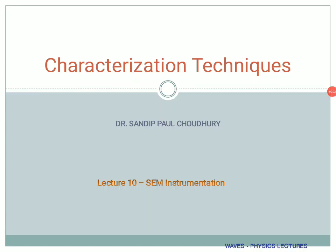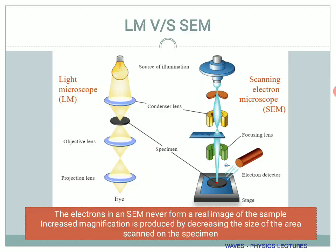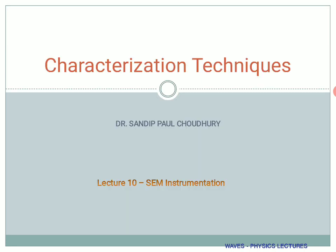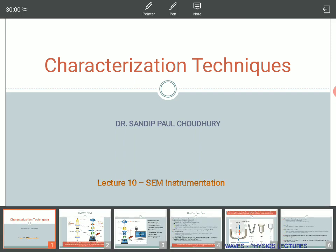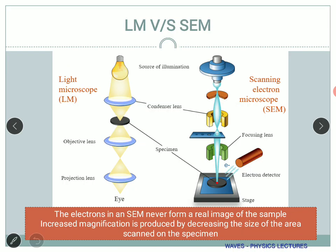We are going to start with lecture 10 and talk about the instrumentation part of the scanning electron microscope. A scanning electron microscope is usually a system which can be compared to an optical microscope, but the instrumentation part is slightly more complicated. Let's use a diagrammatical representation to understand this. In a light microscope, you see through this direction, and the sample is illuminated via a bulb or a light source at the bottom.